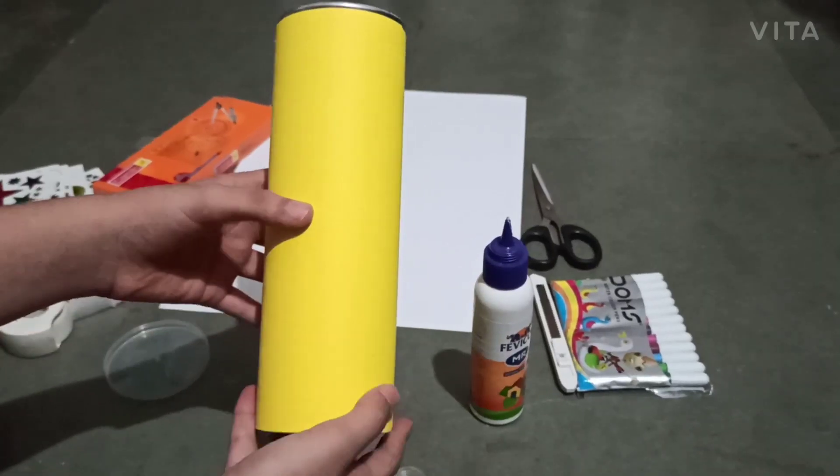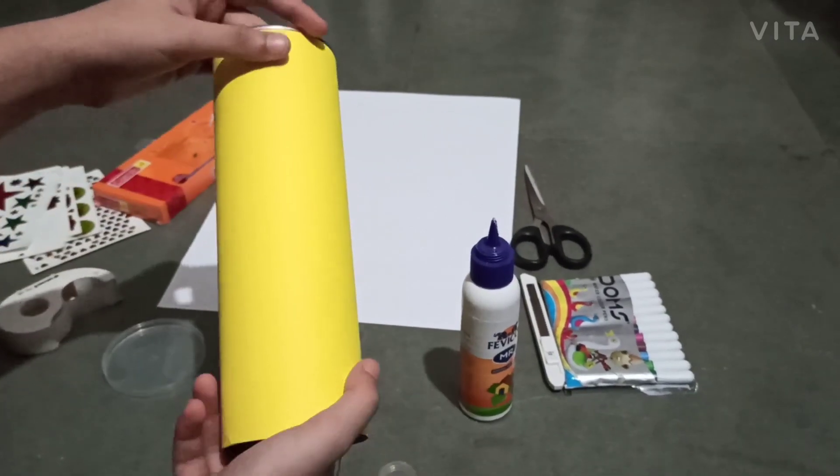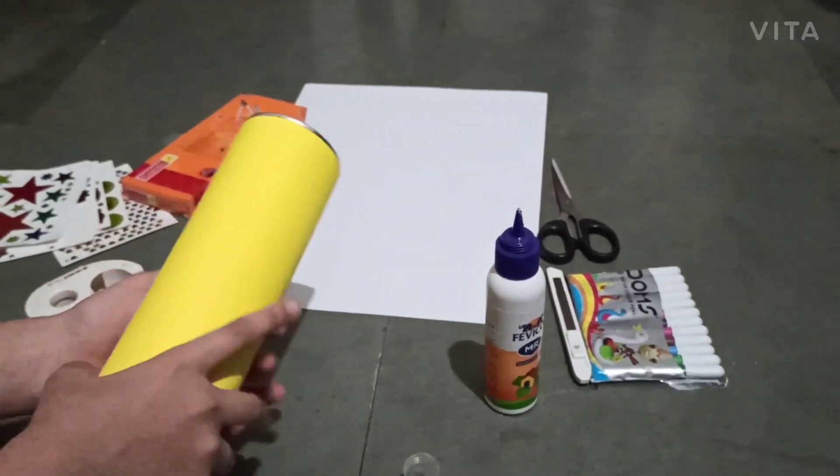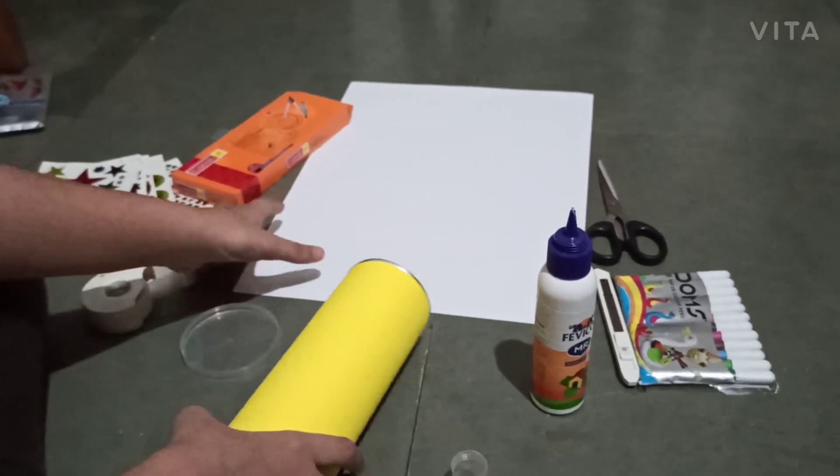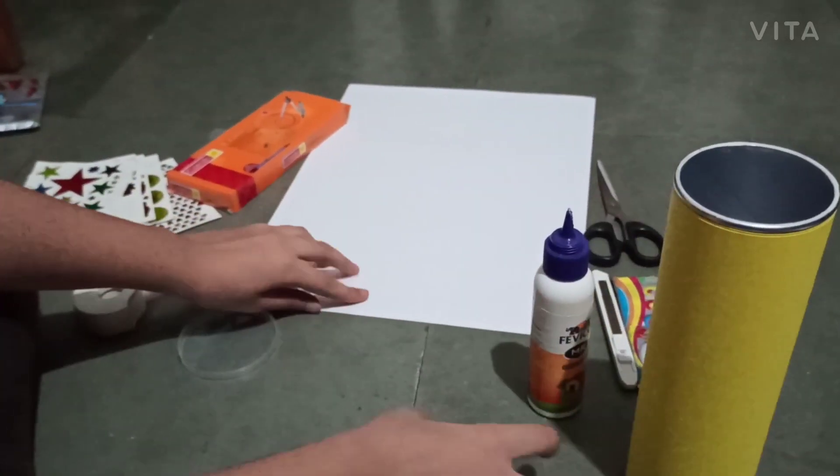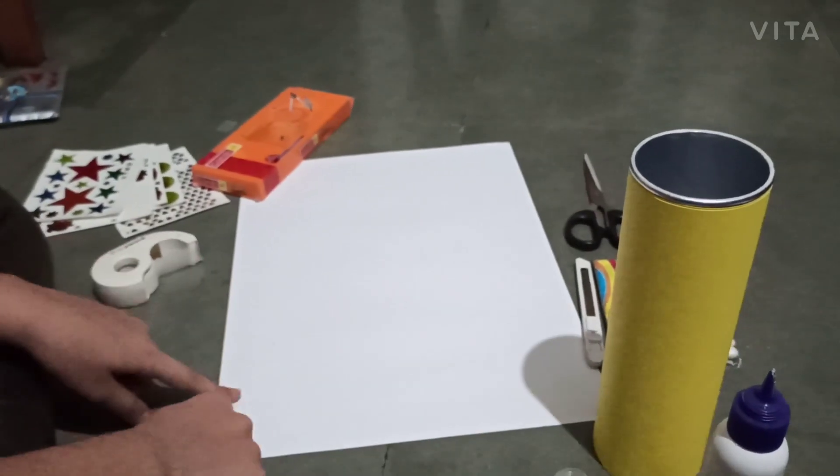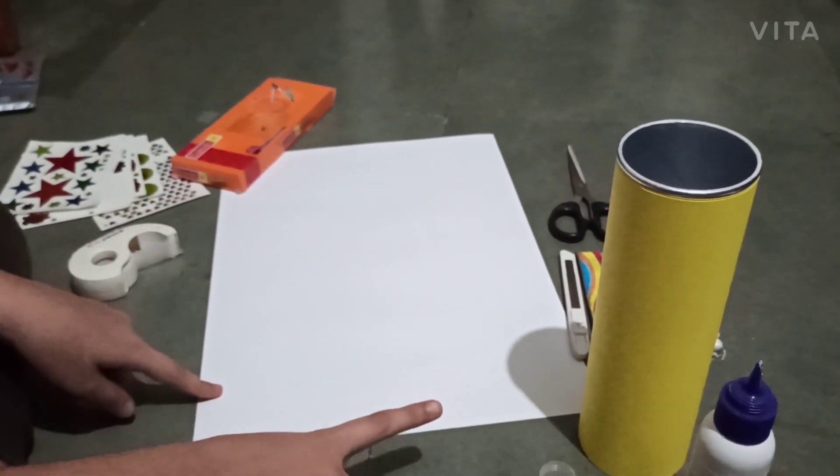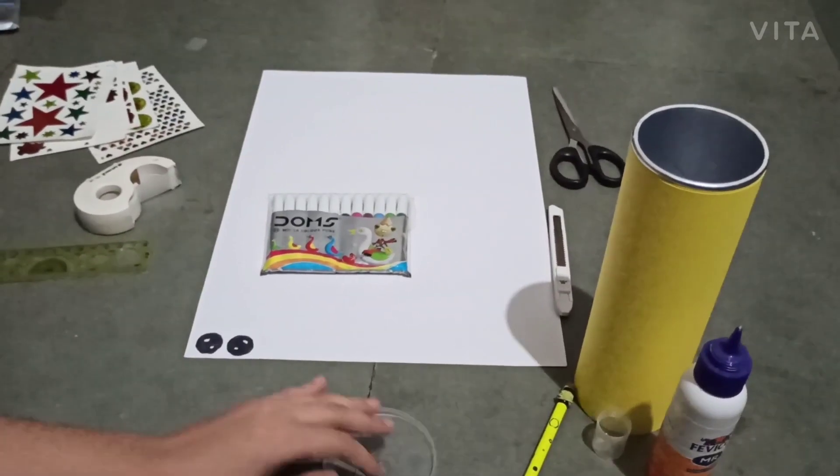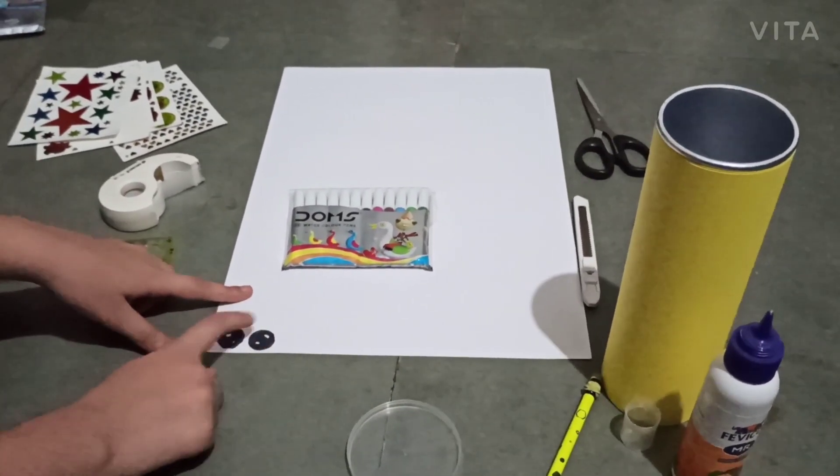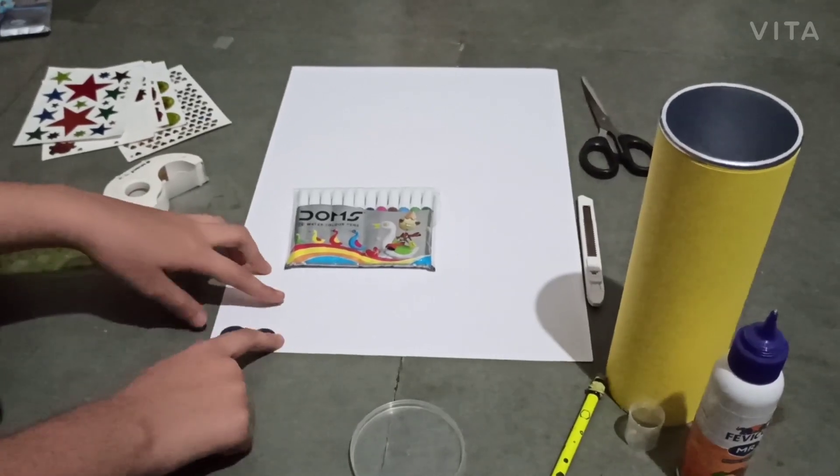Now I have covered it with paper, so now let's decorate it. First I will take this white paper and draw two circles for eyes. Now guys I have drawn these two eyes and now we have to cut it.